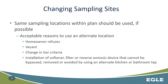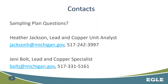Within the sampling plan, you should use the same sites if possible, but there are always reasons you may need to find an alternate site — that's where the buffer comes in. These are samples taken at private residences, so the homeowner can refuse, the property may be vacant, there may be a change in tiering criteria, or the homeowner has chosen to install a point-of-use or point-of-entry treatment device such as a softener, filter, or reverse osmosis device, which would also change whether you should sample at that location. If you have any questions, please contact Heather Jackson or myself at the email addresses and numbers listed on the slide. Thank you very much.